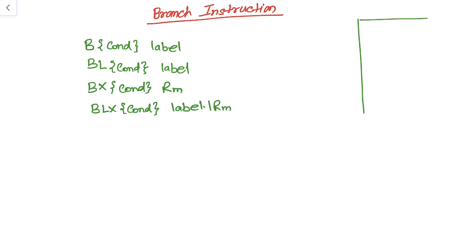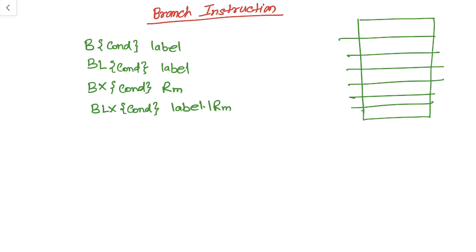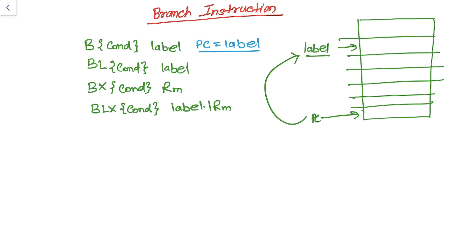Let's say you have a memory address divided into many parts, and your program counter is here at a certain location, and a label is somewhere else. If you want the PC to execute instructions from the address of this label, then when we write B, it indicates that the PC would be loaded with the new address indicated by the label.